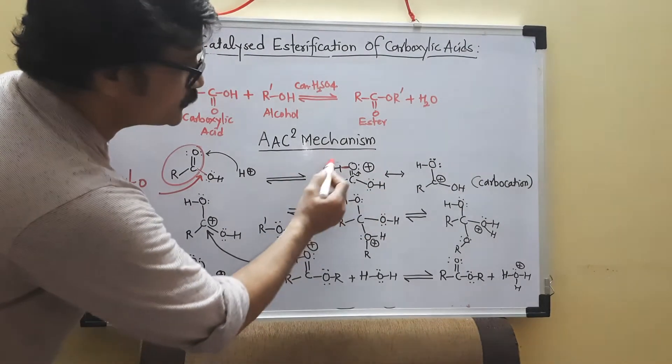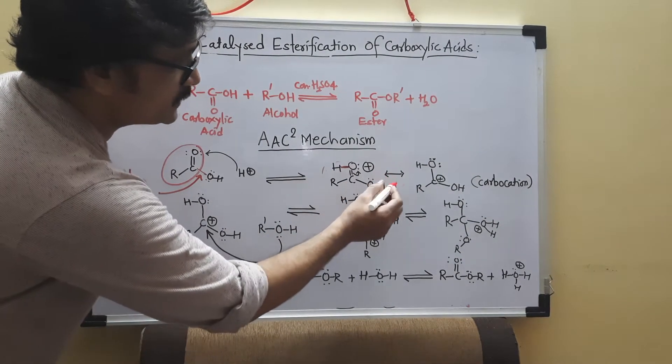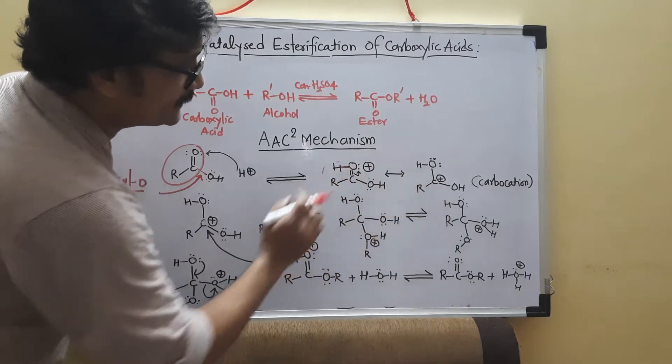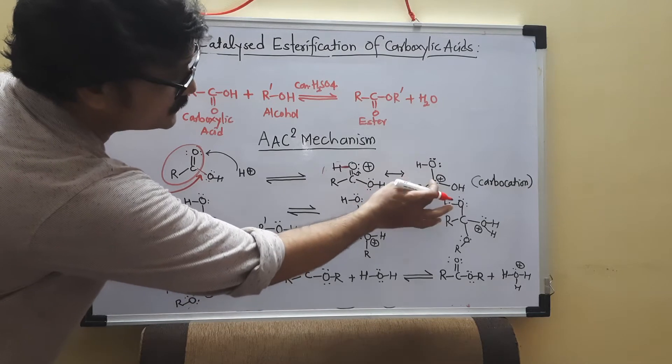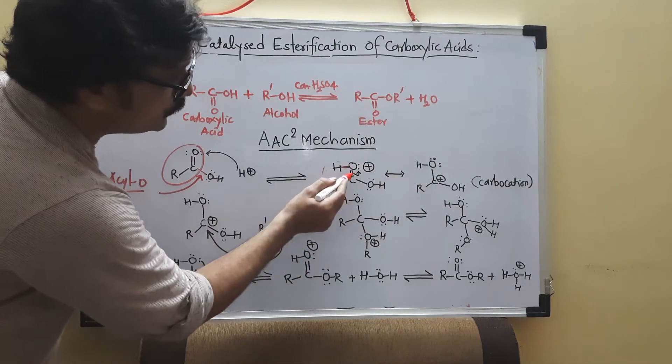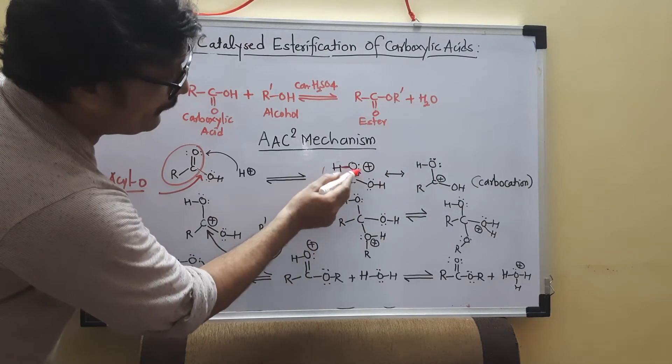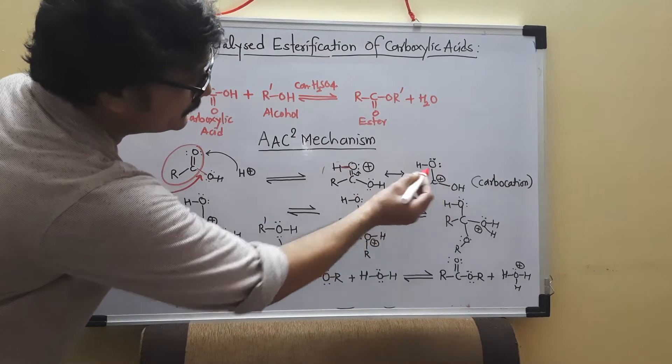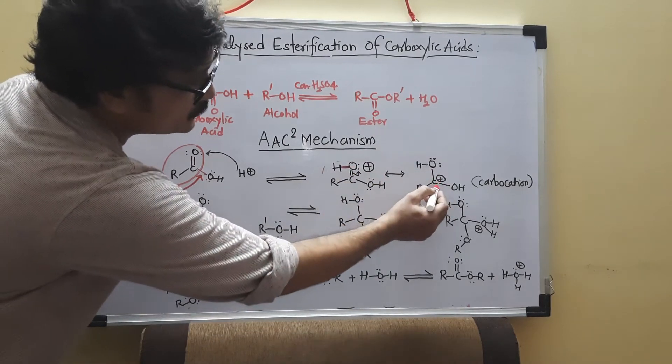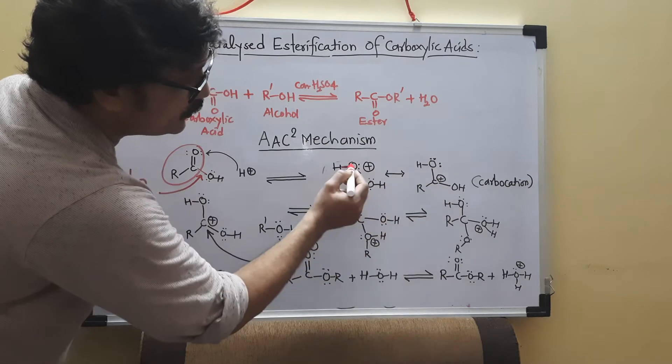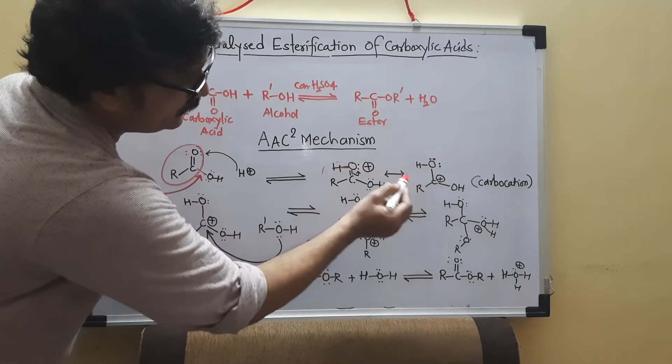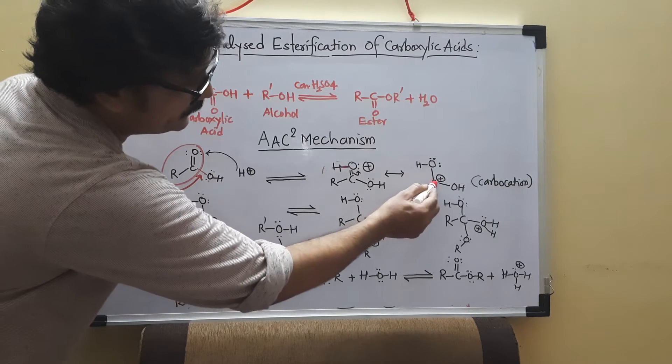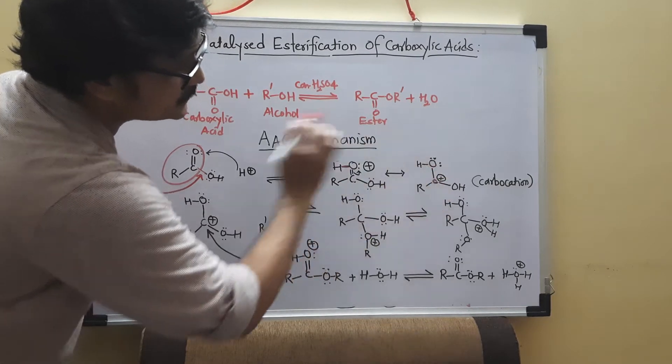And this is actually the stable species because it can undergo resonance. So how that resonance structure is obtained? You can move this pair, pi bond over the oxygen. So you will get here complete positive charge over carbon, not over oxygen. Oxygen is highly electronegative. Now the carbon is bearing positive charge.